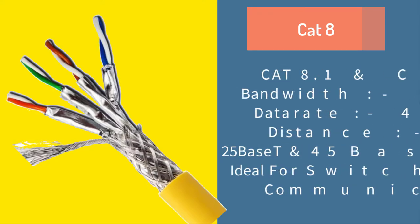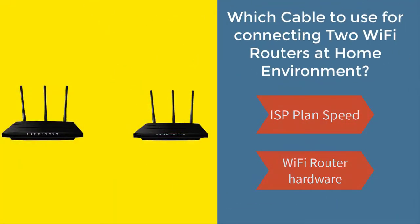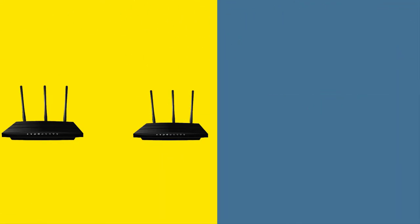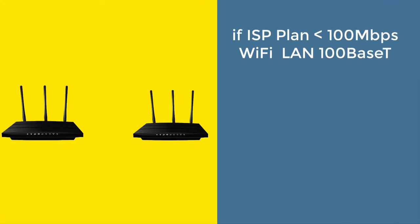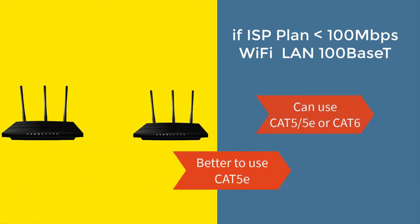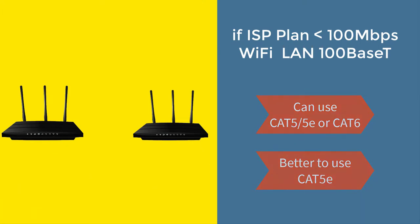Now coming to the home environment — which cable to use depends on your ISP plan speed and wifi router hardware. We can use cat5, cat5e, or cat6 to connect two wifi routers at home. If your ISP plan is below 100 Mbps and your wifi LAN port is 100BASE-T Ethernet, then you can use cat5, cat5e, or cat6, as all support 100 Mbps over 100 meters. Using cat5e is better because it is less expensive than cat6.